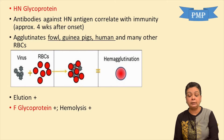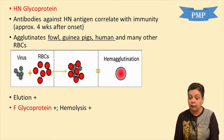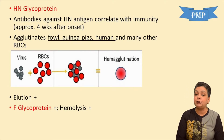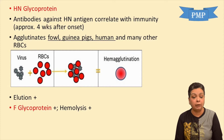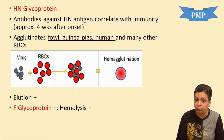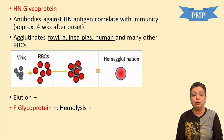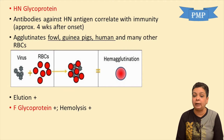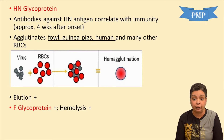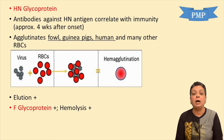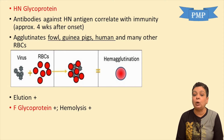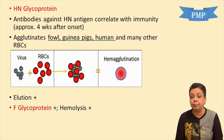The two important proteins forming projections or peplomers on the virus are the HN glycoprotein and the F glycoprotein. The hemagglutinin neuraminidase glycoprotein — antibodies against this HN antigen correlate with immunity, and these antibodies appear around the fourth week after onset. This glycoprotein is able to agglutinate fowl, guinea pig, human and many other RBCs.